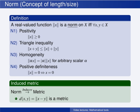So the norm gives us a way to measure the length of an element, and this is a stronger concept than the metric, in the sense that if a set has a norm, then this norm also gives the set a metric — we say that it induces a metric. And this induced metric between two elements x and y is given by the norm of x minus y. In other words, if we can measure the length of an element in the set, then we can use this to also measure the distance between two elements, giving this induced metric.